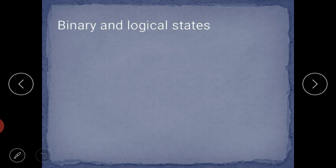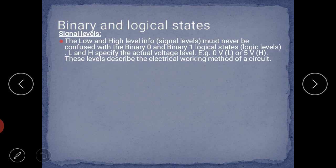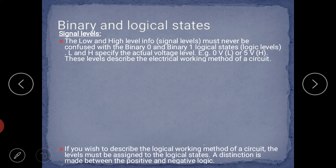Now, binary and logical states — signal levels. The low and high level information must never be confused with the binary 0 and binary 1 logical states. L and H specify the actual voltage level. For example, if the voltage is 0 volts, the logical state is L; and for a higher voltage such as 5 volts, the logical state is H. This level describes the electrical working method of a circuit.